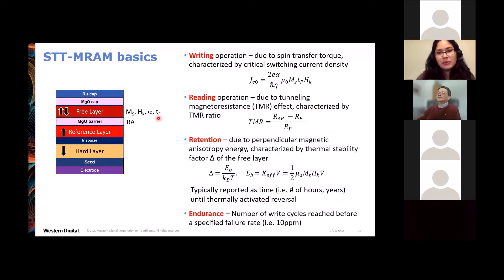So I'll just review some of the major concepts for STT MRAM. The switching happens by spin transfer torque, characterized by critical switching current density. You'll see here that this is largely dependent on a lot of properties of the free layer: the damping parameter, the saturation magnetization, thickness, and anisotropy field. The reading is done by measuring tunnel magnetic resistance. The retention or non-volatility is due to the perpendicular magnetic anisotropy energy of the free layer characterized by the thermal stability factor. And this is typically reported as the time, let's say a number of years, until a thermally activated reversal occurs. Endurance, this is needed for reliability. It's often reported as the number of write cycles reached before a specified failure rate, for example, a failure rate of 10 parts per million.